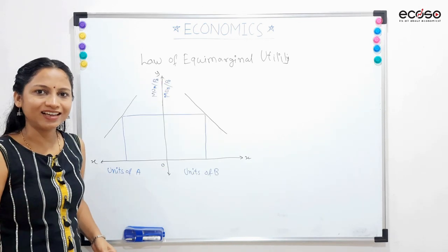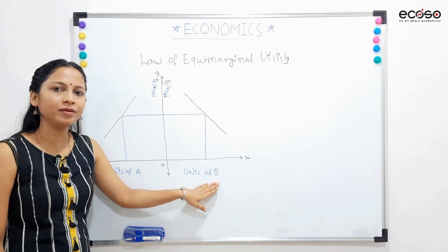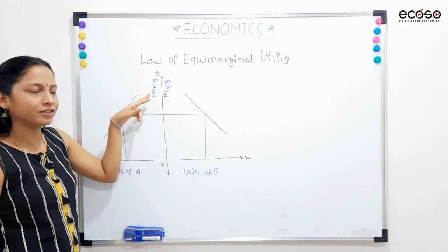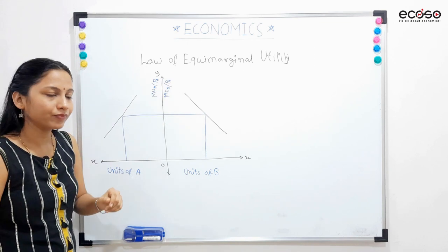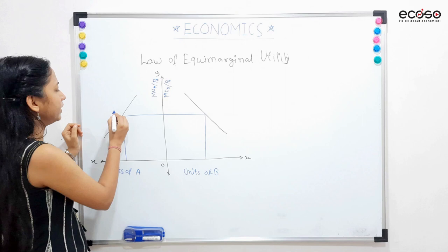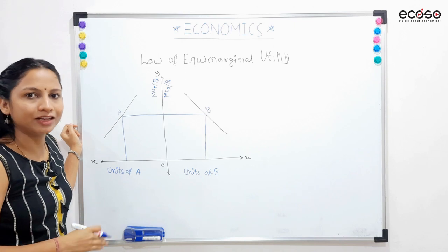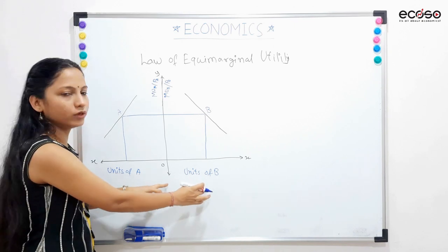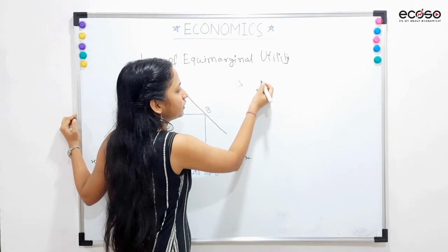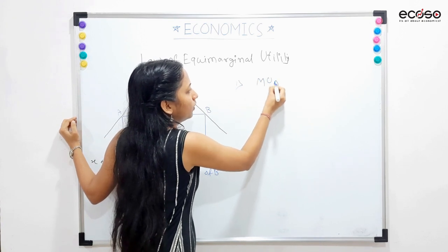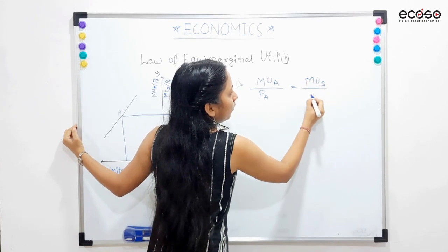Now, we will see the diagram. In this diagram, x-axis ke ek part pe hum log show kiye units of commodity A, aur doosare part mein units of commodity B show kiye. Then y-axis pe ek part mein MUA divided by PA, and other part mein MUB divided by PB. Yahan pe humare paas do points hain — point A and point B — jahan pe humaari equilibrium condition satisfy hoti hai, because yahan pe dono commodity ki units se milne waali marginal utility same hai. Isi liye humaari first condition MUA upon PA is equals to MUB upon PB satisfy hoti hai.